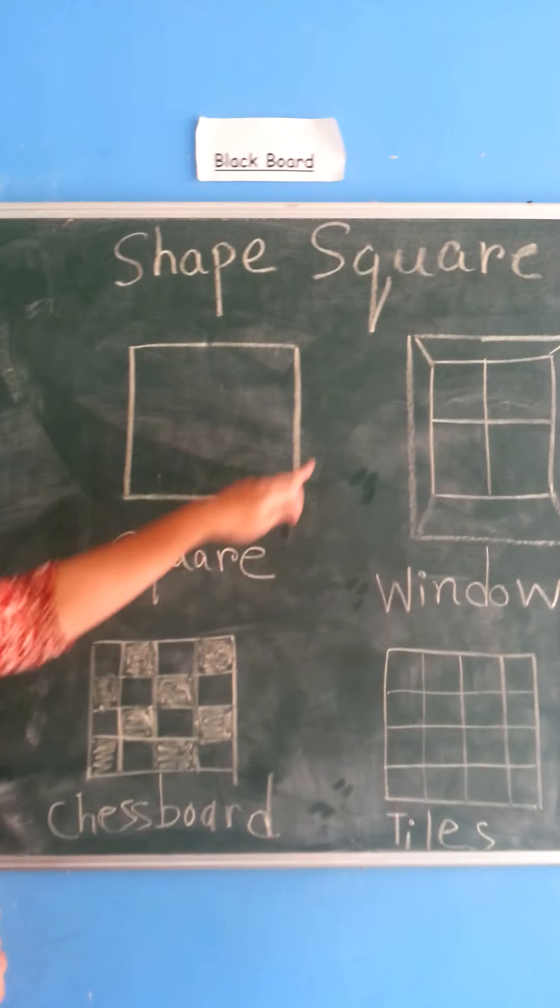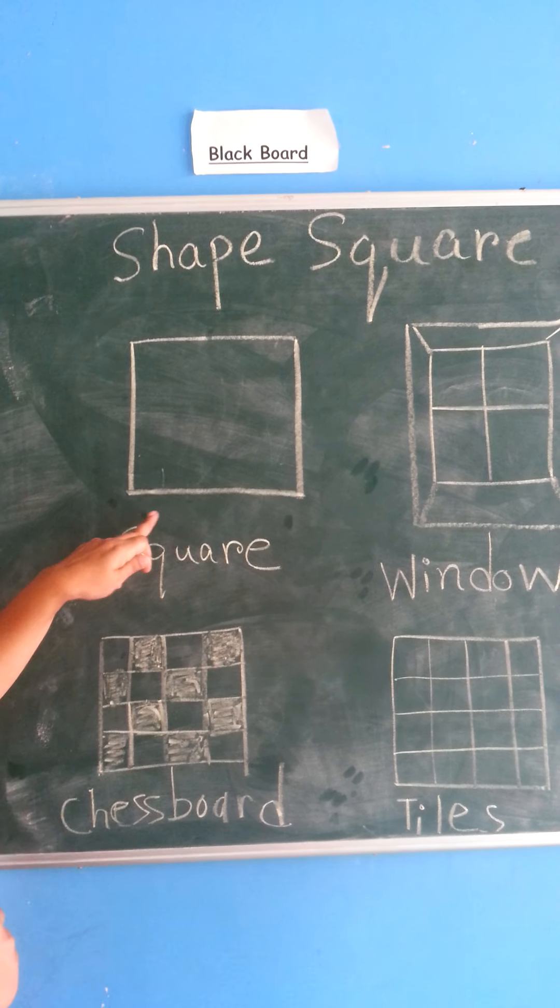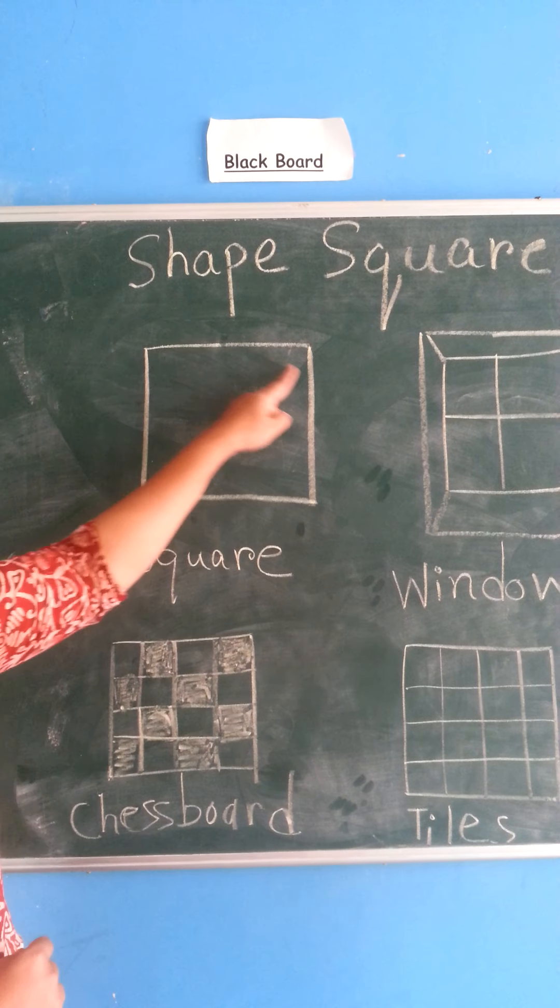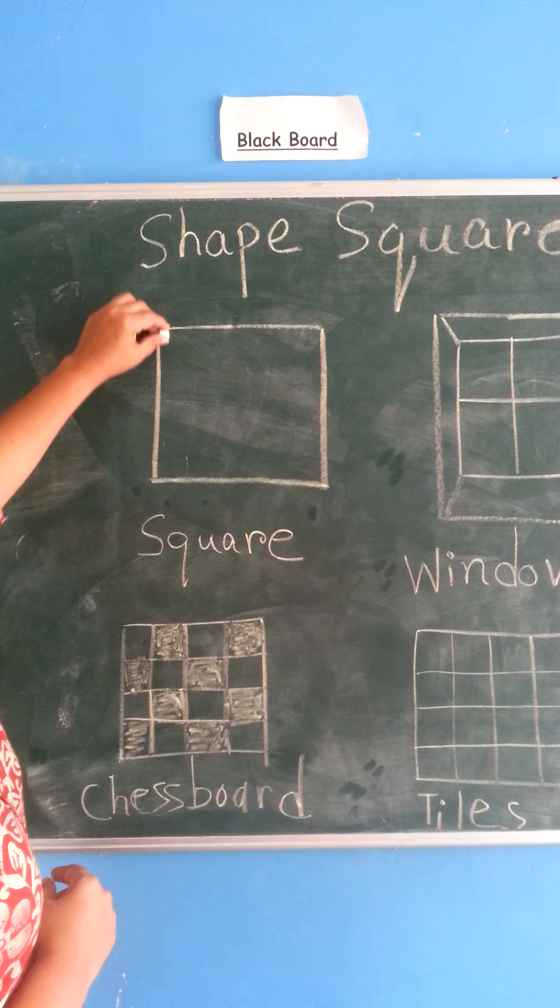See this children? This is a square shape. Ye kya hai? Square shape. See this? Square has four equal sides and four corners. Square me kya bandha hai?